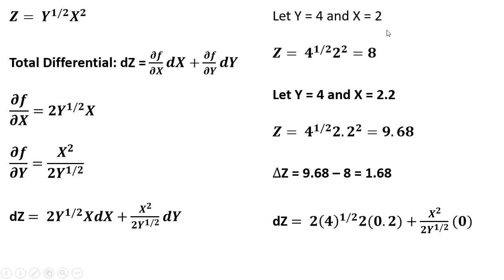And then the dx here, the change in x, is going to be 2.2 minus 2. So that's where this 0.2 is coming from. The dx here is the change in x. So x went from 2 to 2.2, a 0.2 unit increase.